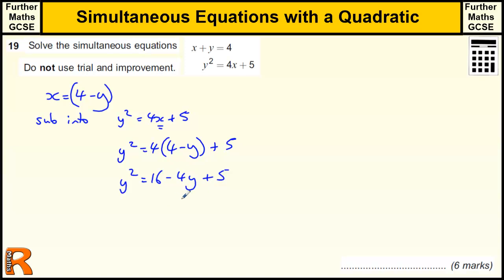When I take this stuff over to this side, I've got y squared plus the 4y, because I need to take it over to this side. We've got 16 plus 5 is 21, take it over to this side is minus 21, and that equals 0.